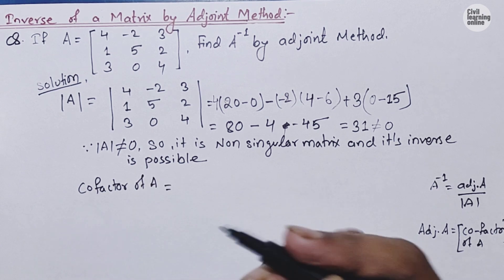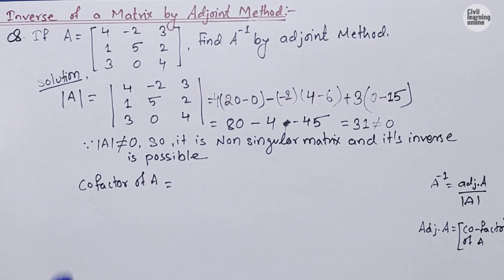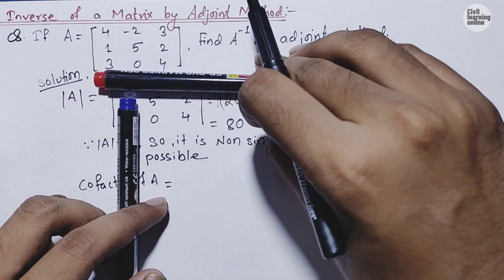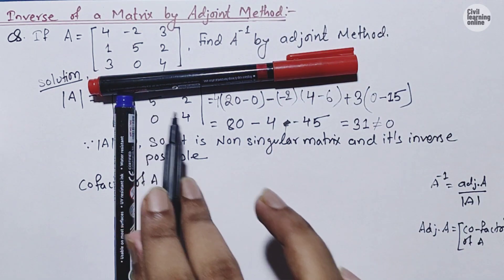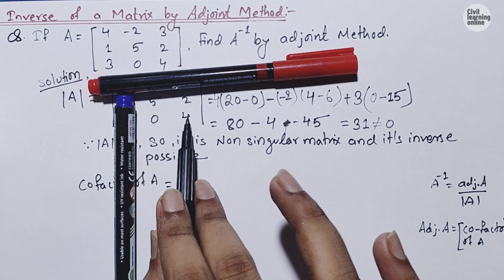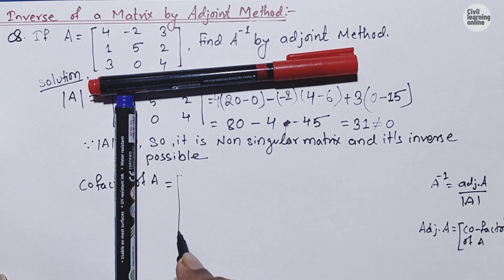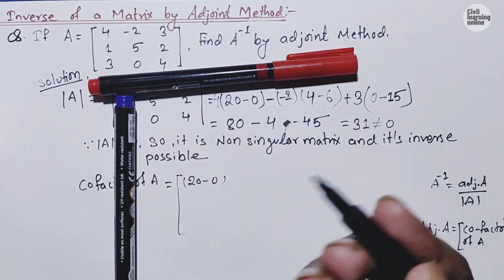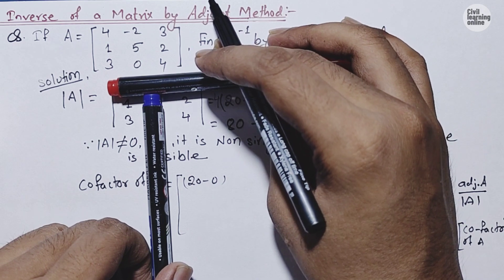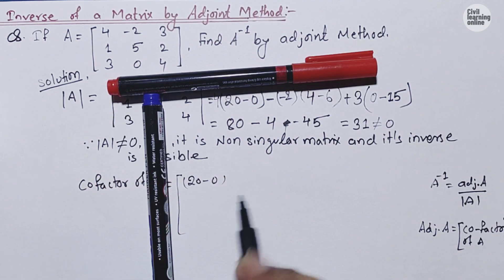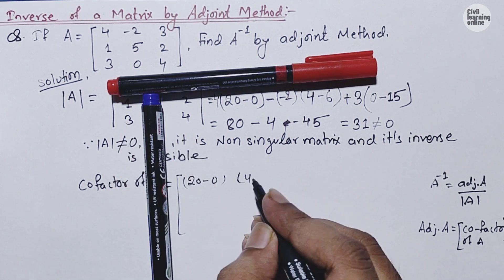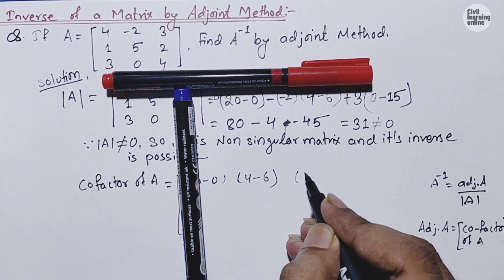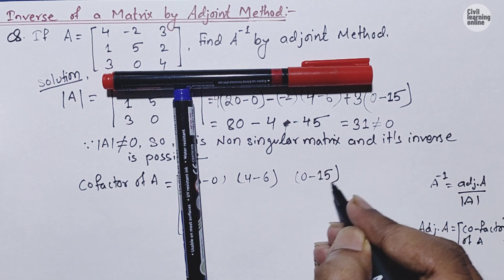Finding cofactors of the first row: For element 4, cover its row and column; remaining elements are 5, 0, 2, 4. Cofactor = 5×4 − 0×2 = 20. For element 1 (position −2 in the matrix), cover its row and column; remaining elements are 1, 4, 3, 2: 1×4 − 3×2 = 4 − 6 = −2. For element 3, cover its row and column; remaining elements are 1, 0, 3, 5: 1×0 − 3×5 = 0 − 15 = −15.